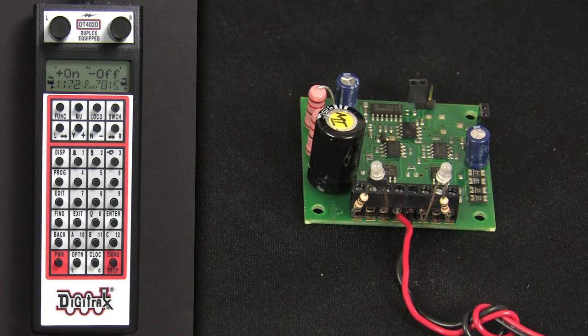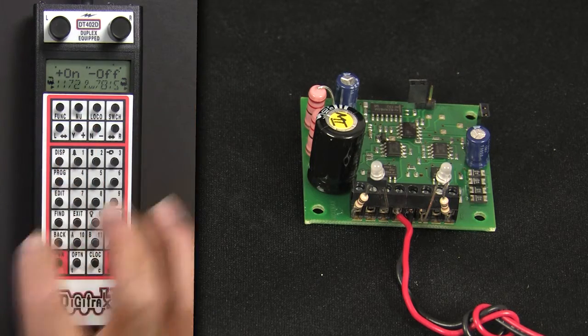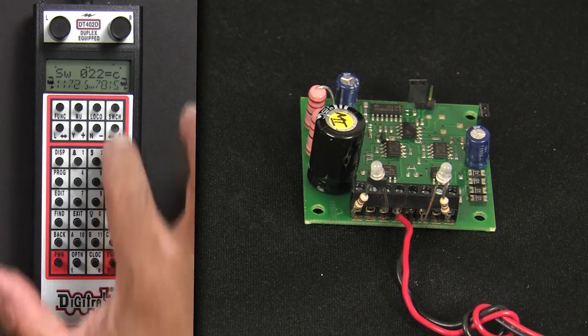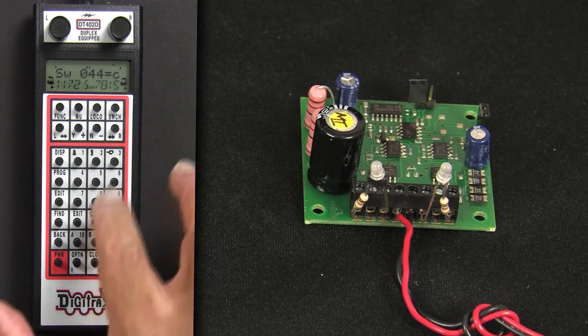So, here we go. Turn on track power, switch 22, close it, switch 44, close it, and it's done.